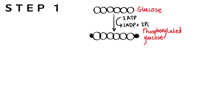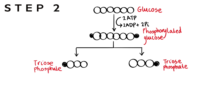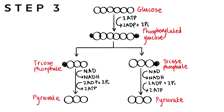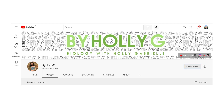That is glycolysis summarized in three steps: phosphorylation of glucose for three reasons; splitting into two molecules of triose phosphate; and finally converting each triose phosphate into pyruvate via oxidation, generating two ATP per triose phosphate. That's it for part two of respiration. I hope you learned something — give it a thumbs up, comment below, subscribe if you're new, and I'll speak to you very soon. Bye!